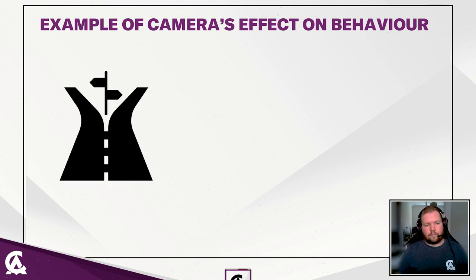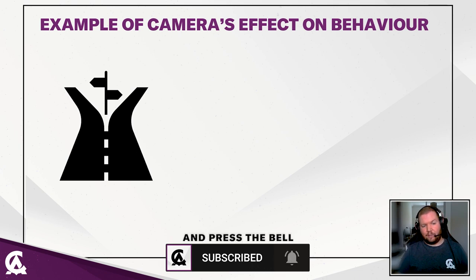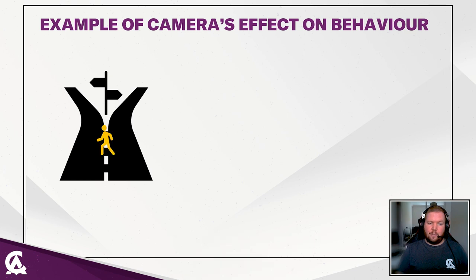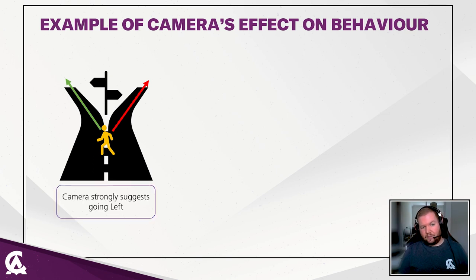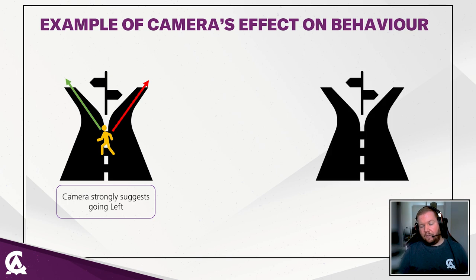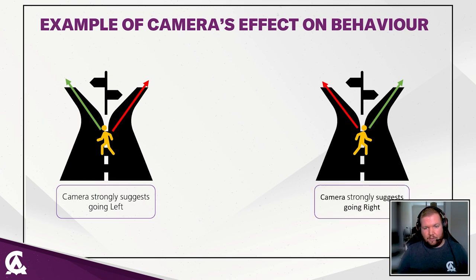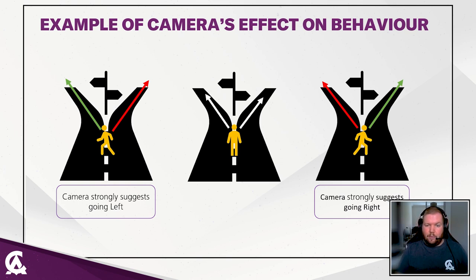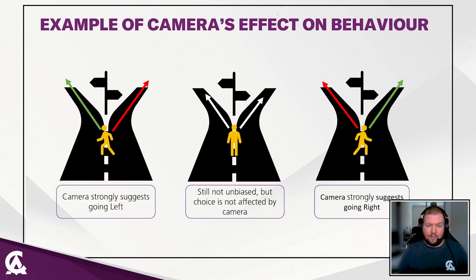Here's an example of camera's effect on player behavior. Say you have a road that splits into two smaller paths. If you automatically pan the camera to the left as the player walks toward the split, the player will be more likely to go left — because the camera strongly suggests it. If you pan to the right path, the player will be much more likely to go right. But if you don't move the camera meaningfully, it becomes a player choice — still not unbiased due to environment and handedness, but the camera won't directly affect their behavior.